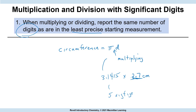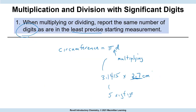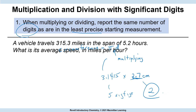Let me point out again — a number without a unit is meaningless. It's important to have our units because we're going to start doing unit conversions. So our answer is 8.5 centimeters, two sig figs.